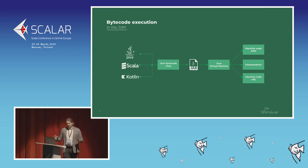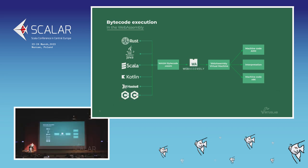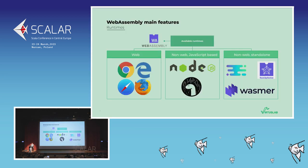In general, if we sum up the comparison of WebAssembly to the JVM, it's very similar — we have this intermediate representation which is interpreted. However, since it is very similar, why should we even go for WebAssembly? Here are a few distinct features. Let's start with the first one: a portable runtime.